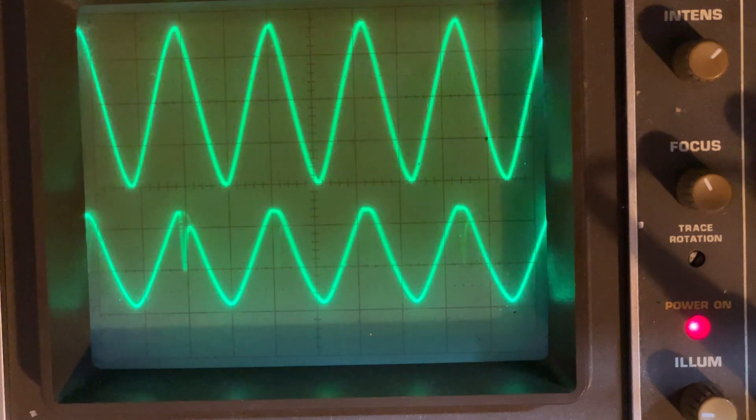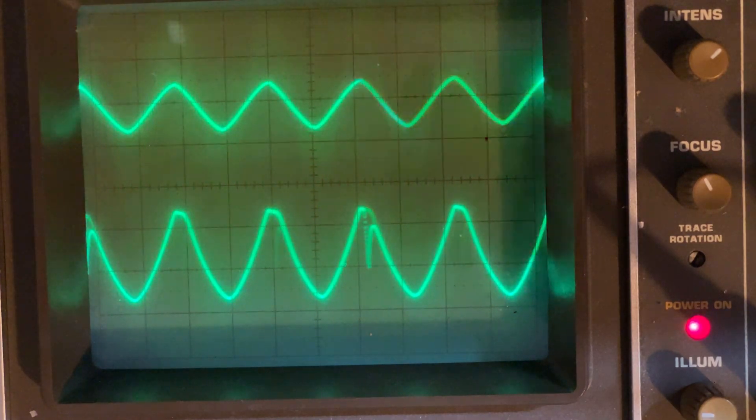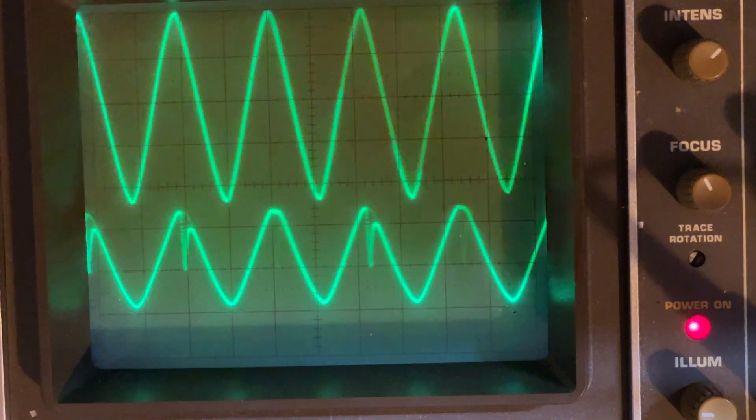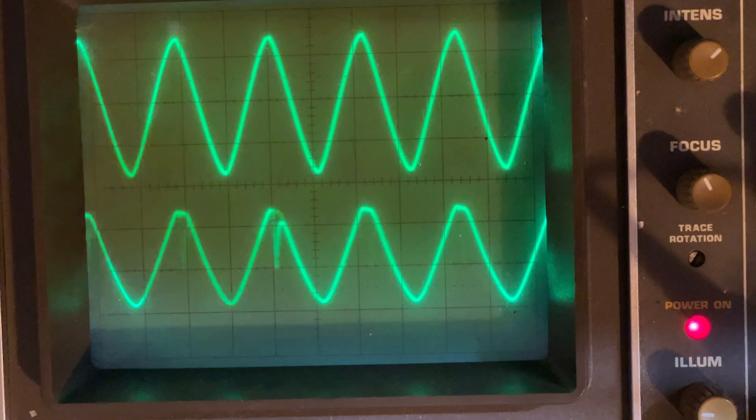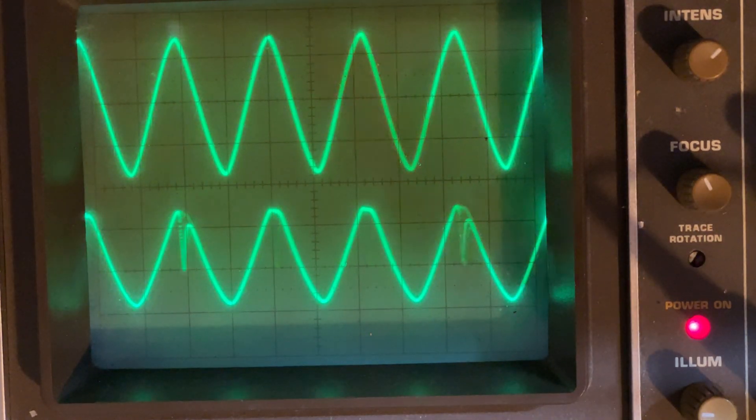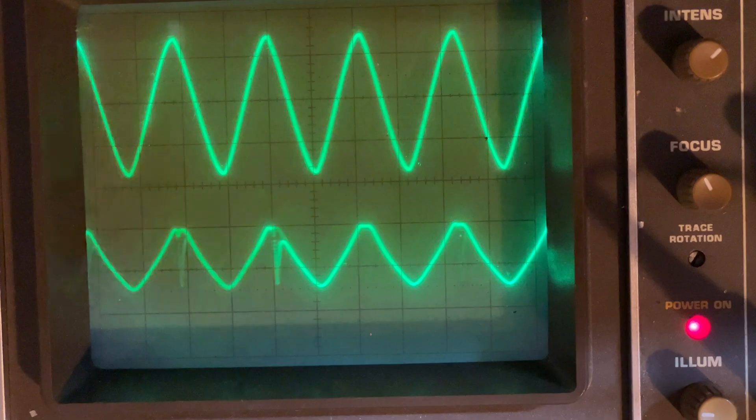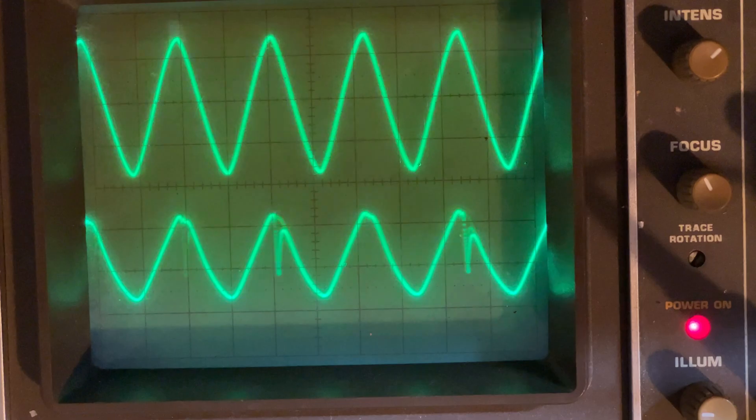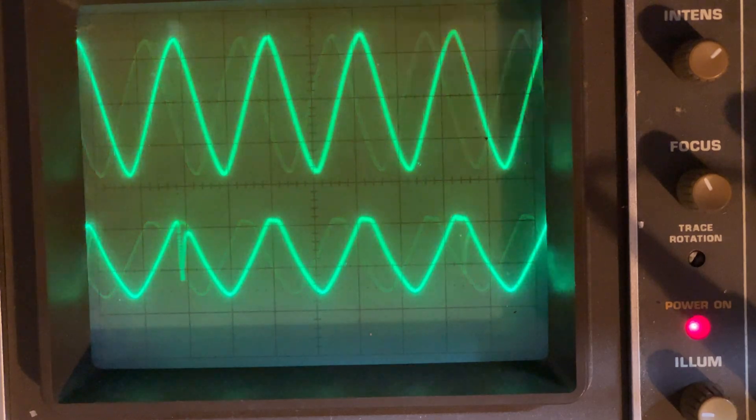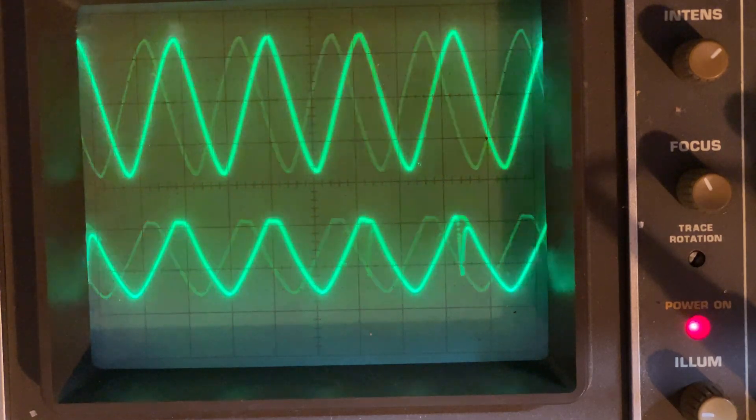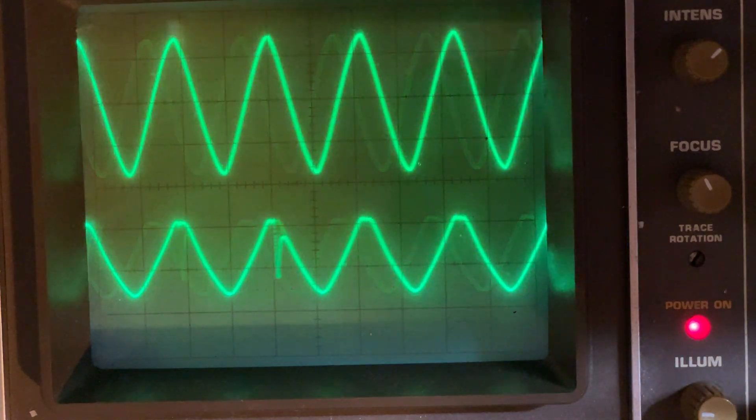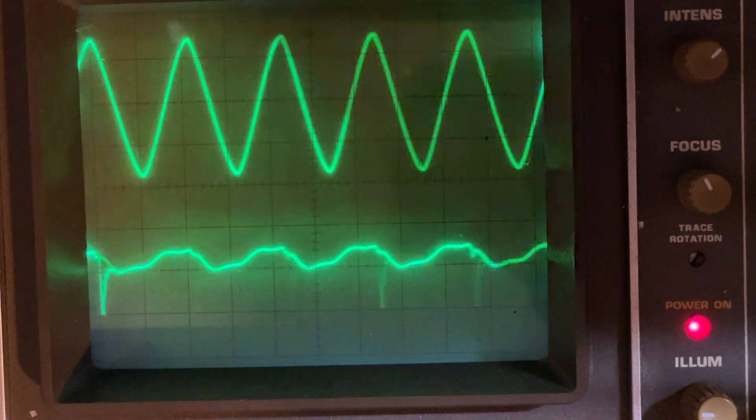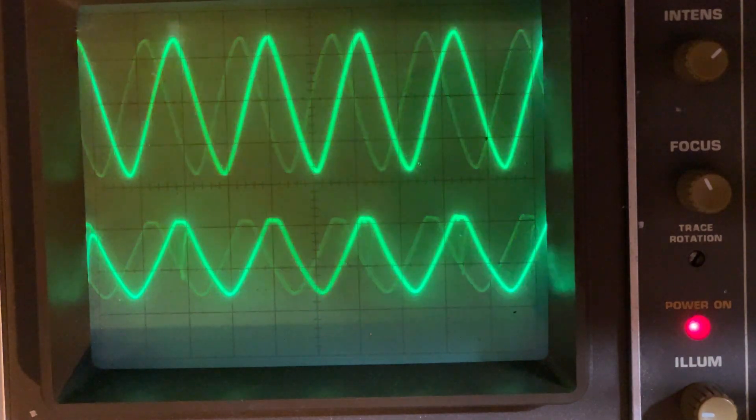So input is our top trace, output is our bottom trace. We've got that weird AGC action going on again. So if we adjust the two potentiometers, we can start to flatten out the signal at the bottom, which we have to bring it down to a minimum level. And there, it actually works. Okay, excellent.